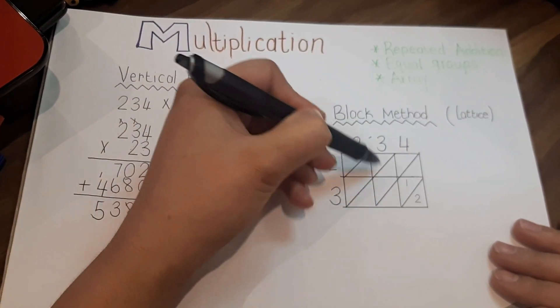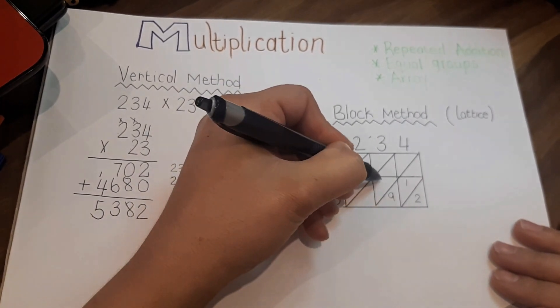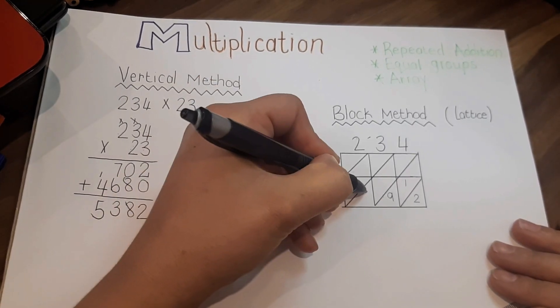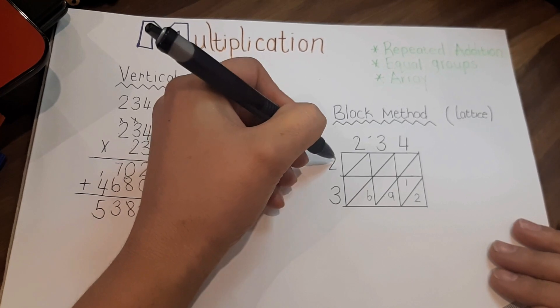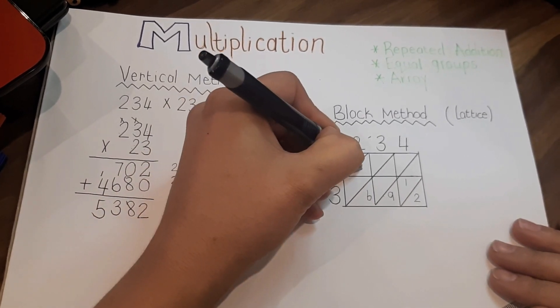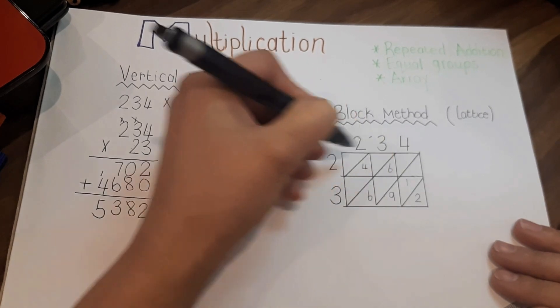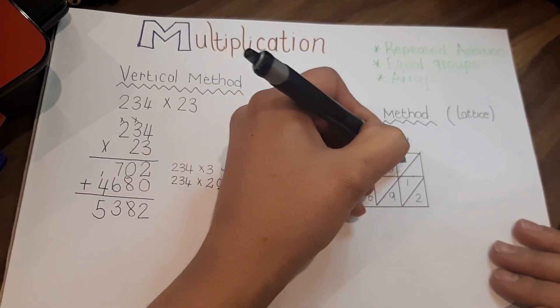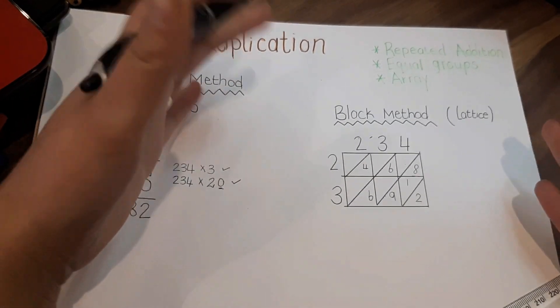3 times 3 is 9, so there's nothing going to be in the top part. 3 times 2 is 6. You can write zeros there or just simply leave them open. 2 times 2 is 4, 2 times 3 is 6, and 2 times 4 is 8.